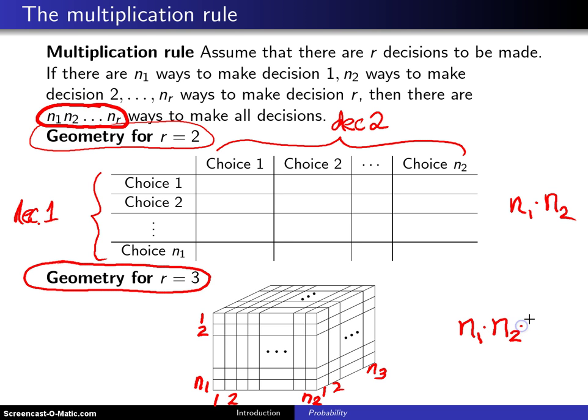n1 times n2 times n3 different ways of making all the decisions. If you had r equals 4, you could simply repeat this rectangular solid n4 different times,